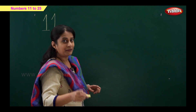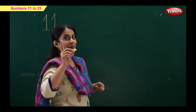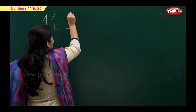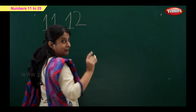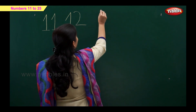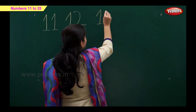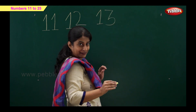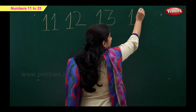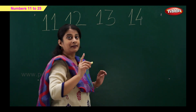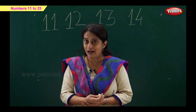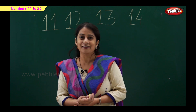Now I will show you how to write number 12. You tell me — which two numbers? 1 and 2! So 1 and 2 makes number 12. Now number 13: 1 and 3 is 13. Number 14: 1 and 4 makes number 14. And now you tell me — which number comes after 14? 15! That's right.